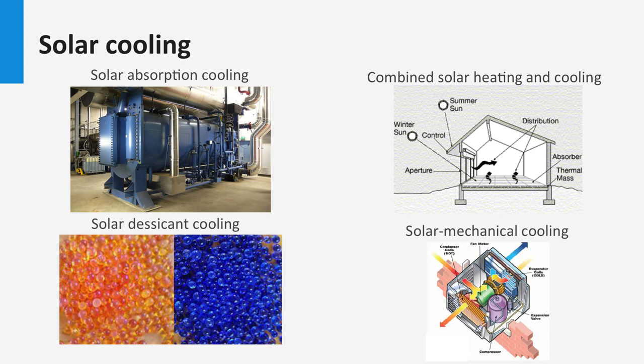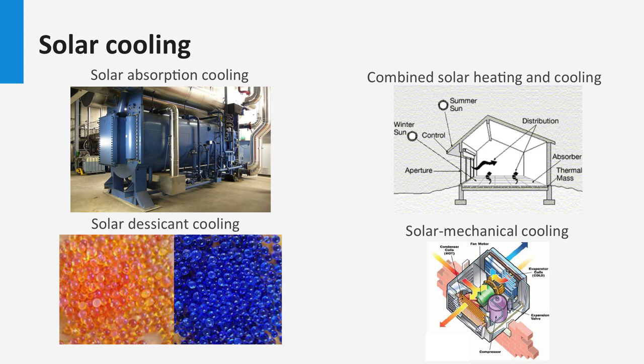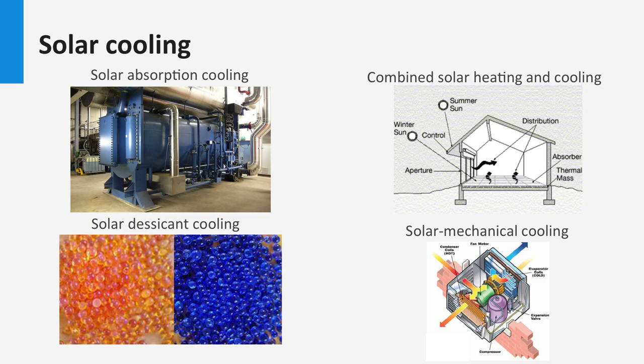Finally, a solar mechanical cooling system combines a solar powered Rankine cycle engine with a conventional air conditioning system. The engine is powered by the heat in the storage tank. In this block we have looked at converting solar energy into heat. In the next block we will convert this heat again into electricity. See you in the next block.